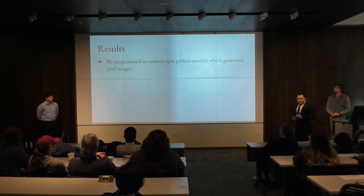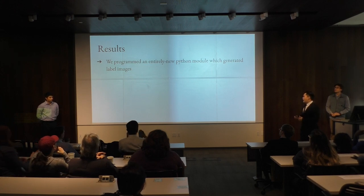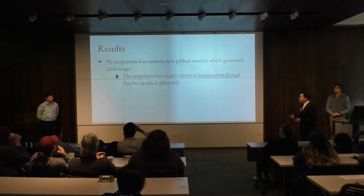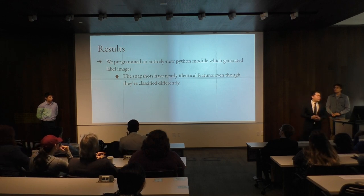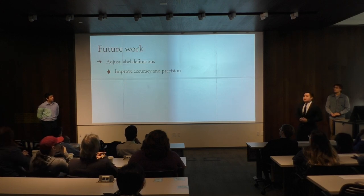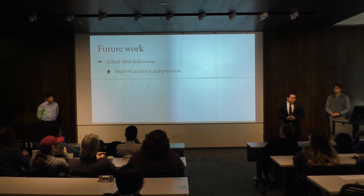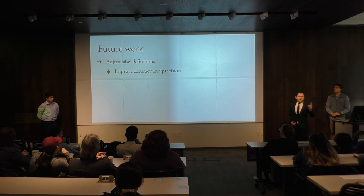We noticed that in many of the small figures being generated by our Python module, these figures were nearly indistinguishable from one another, even though they had completely different categorizations. Moving forward, the labels could be grouped differently in order to improve accuracy and precision — for example, categorizing both ascending and descending modes as a general mode.